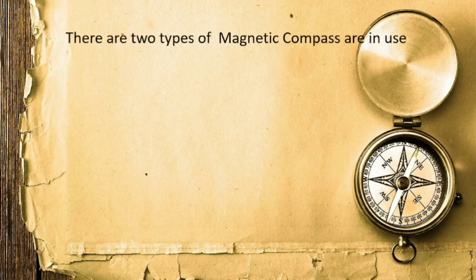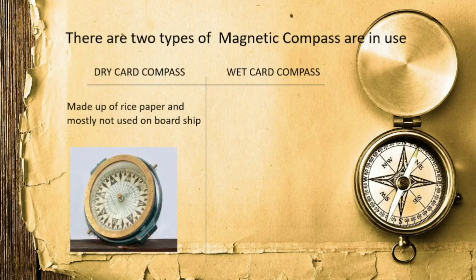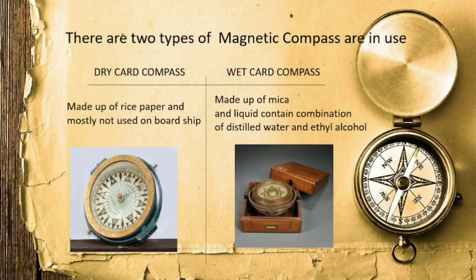We have two types of magnetic compass: the dry card compass and the wet card compass. The dry card compass is used in maximum industry applications and is made up of rice paper, but is mostly not used on board ships. The wet card compass is made up of mica and contains liquid — distilled water and ethyl alcohol — which is used in polar and low temperature areas.